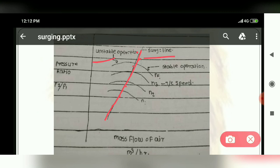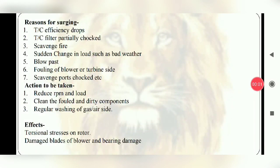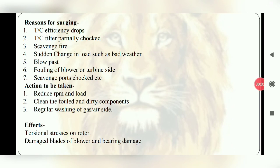So now we will talk about the reasons of surging. It can be turbocharger efficiency drop, turbocharger filter partially choked, scavenged fire, sudden load change such as bad weather, blow past or fouling, turbine blower side or scavenged ports choked. So what are you going to do? First of all, RPM reduce and load reduce and clean the foul and dirty components.